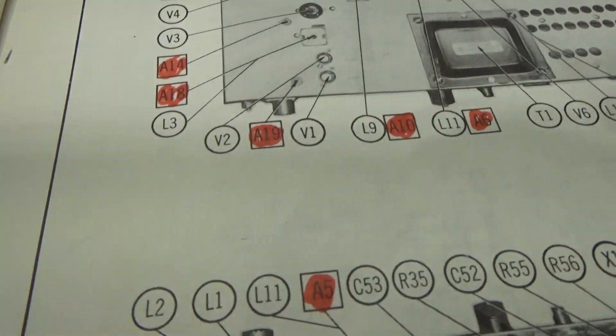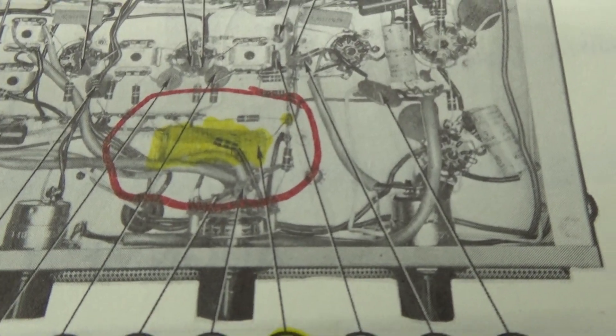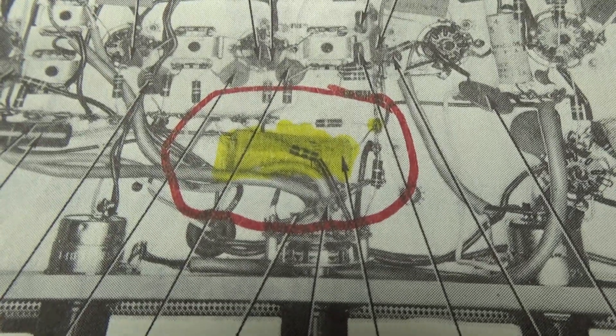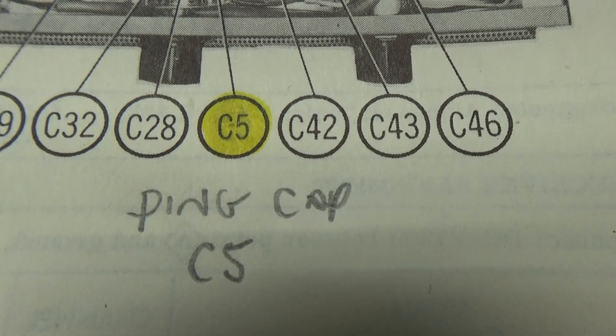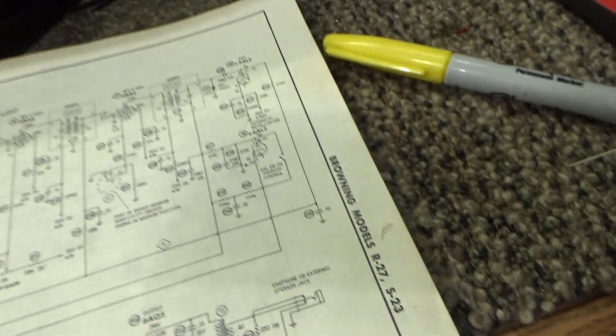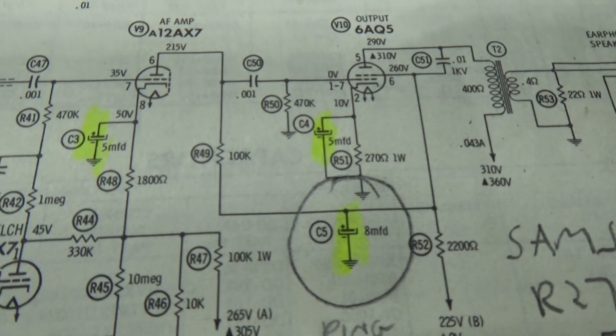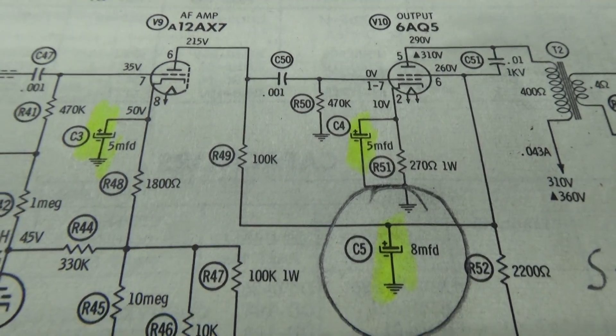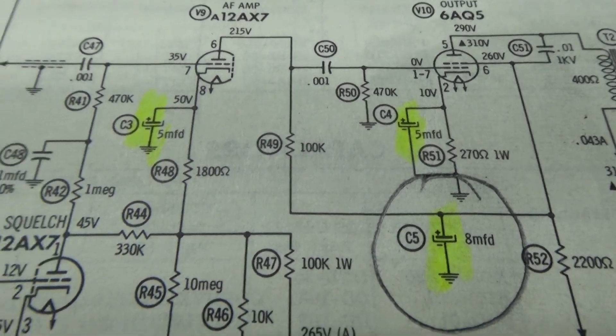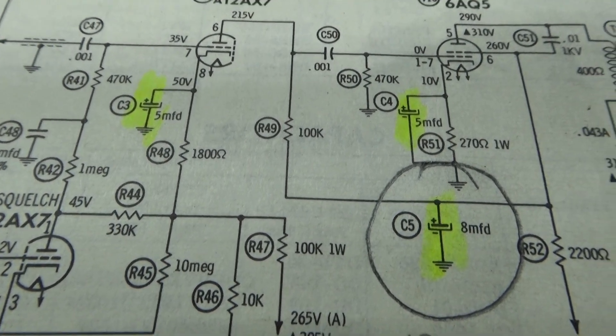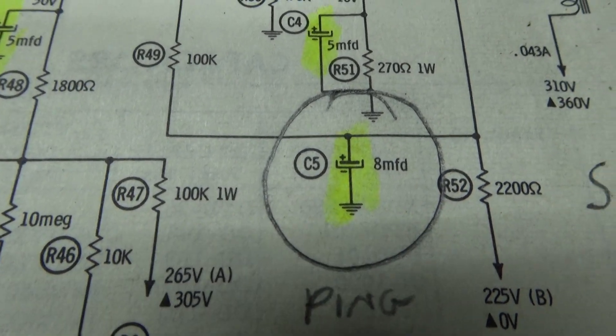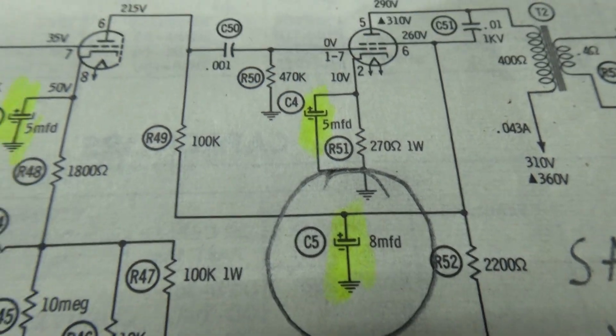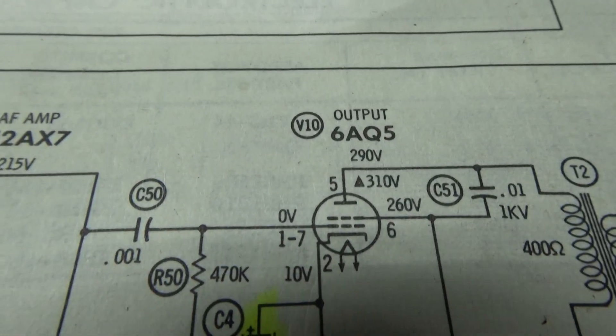On the Sam's, this is actually the picture or pin out, it is C5. They just drew it a little different, but that is the Sam schematic, which is the same thing just drawn a little differently than the Browning schematic. Again, C5, 8 microfarads, 450 volts, goes to pin 6 of the final audio tube.